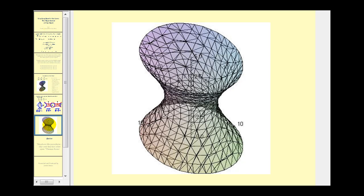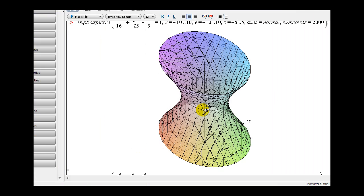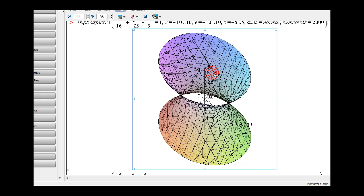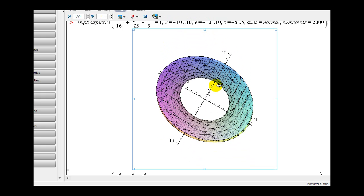Let's go ahead and take a look at a dynamic graph so that we can verify our traces. Again if we take a look at just the xy plane, we can see the elliptical trace here.